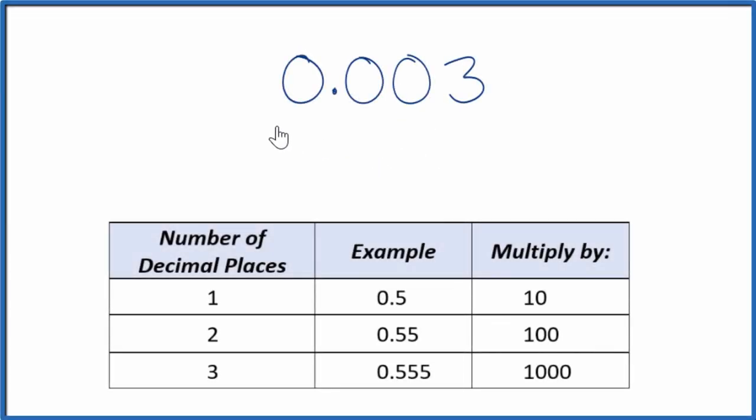If you're asked to write the decimal 0.003 as a fraction, here's how you do it. First off, let's just call this 0.003 over 1. Since we're dividing by 1, we don't change the value, but now we have the start of a fraction.